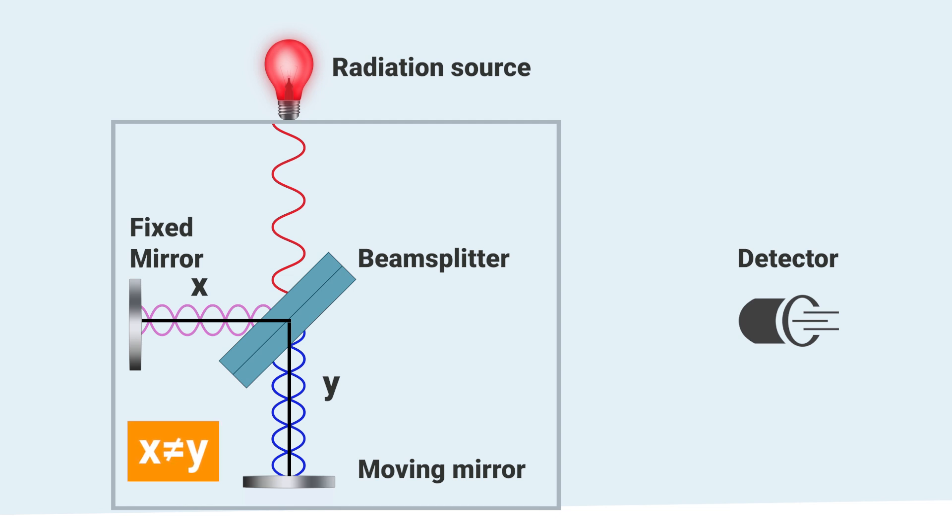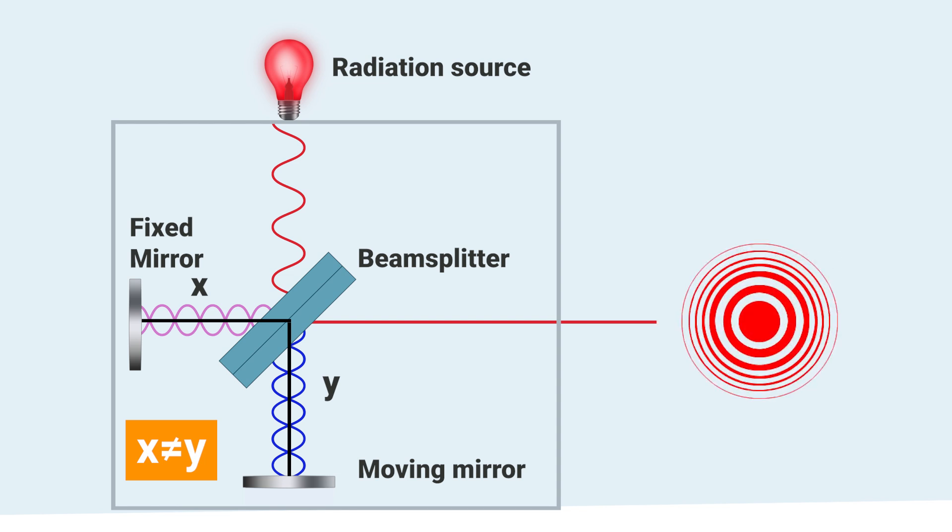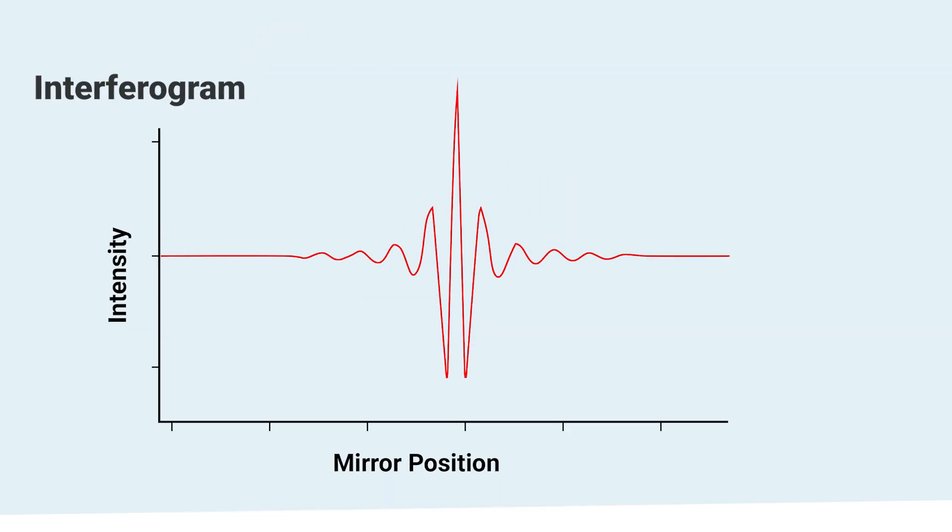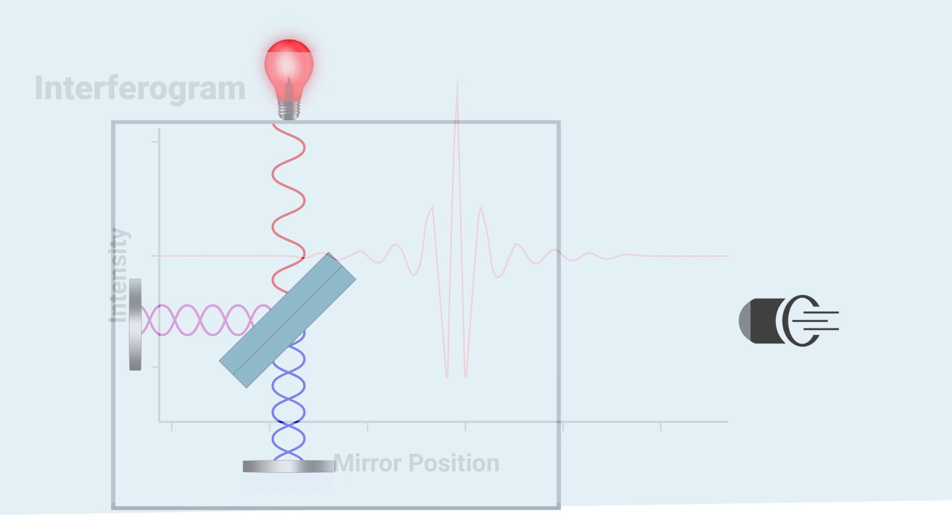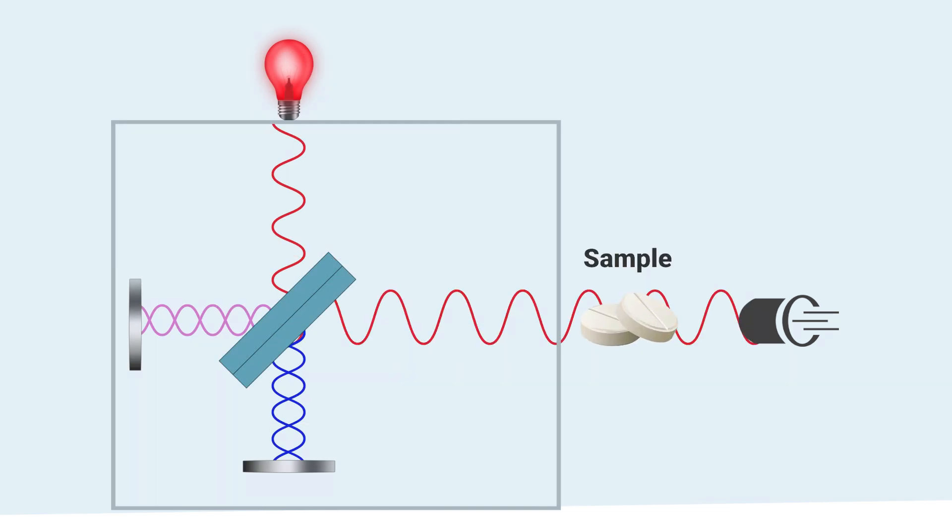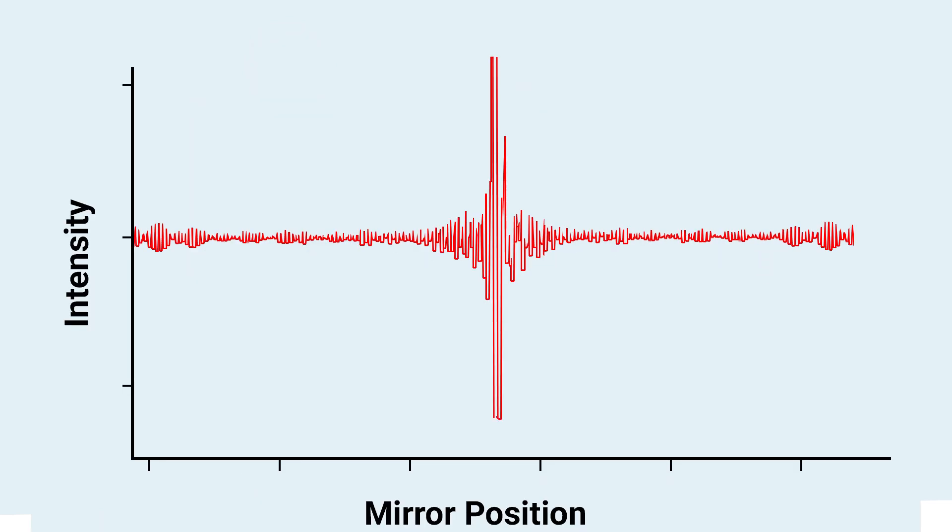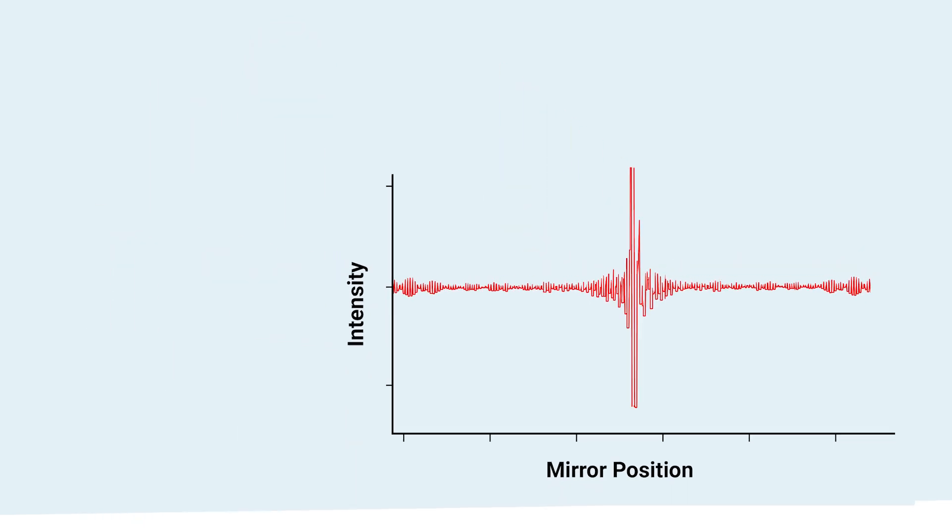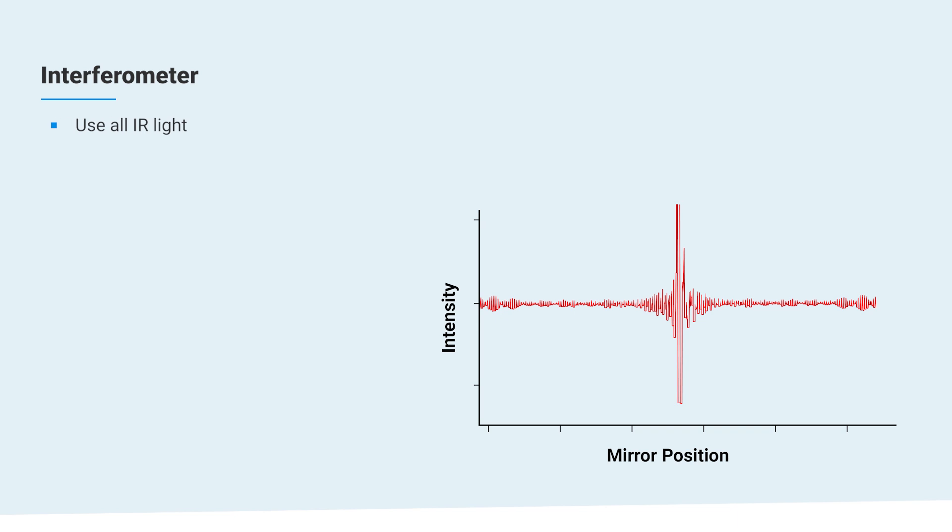Now destructive interference occurs and an interference pattern emerges. This can be recorded as a so-called interferogram that tells us the intensity of all IR radiation based on the mirror position. If we would introduce a sample into that beam, the interferogram would immediately change according to the sample's unique absorption pattern. And since we use all IR light and exactly know the mirror position, we could exactly tell which IR wavelengths were absorbed in one single swoop.